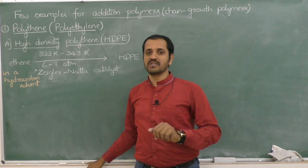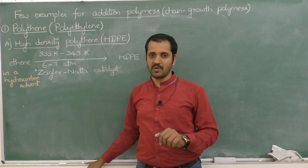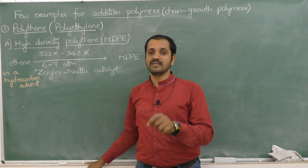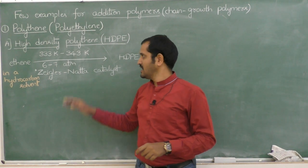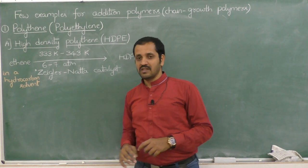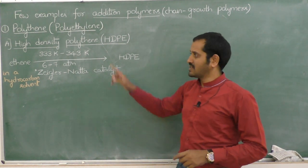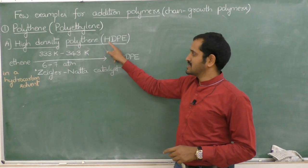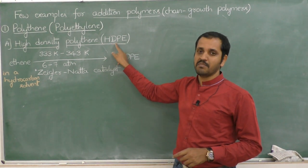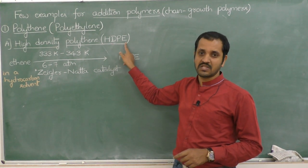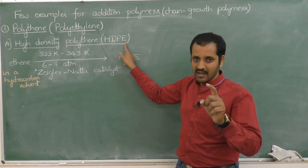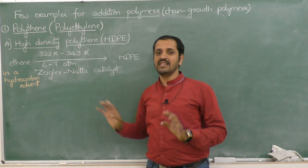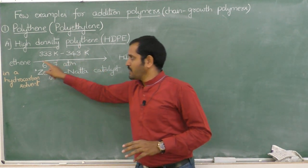If polythene is a branched chain polymer, it is called low density polythene (LDPE). We shall begin with high density polythene, simply referred to as HDPE. Remember, it is a linear polymer.